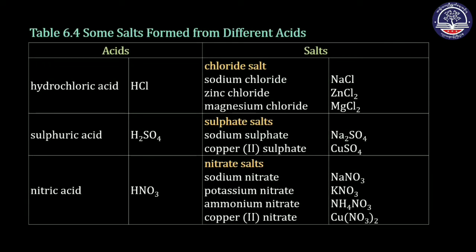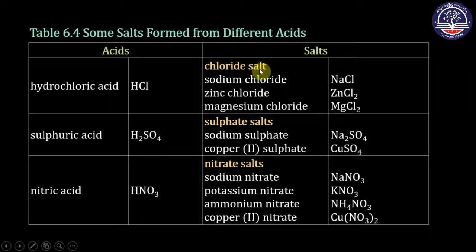Table 6.4: Some salts formed from different acids. Hydrochloric acid has the formula HCl. Hydrochloric acid forms chloride salts. Examples: sodium chloride (NaCl), zinc chloride (ZnCl2), magnesium chloride (MgCl2).